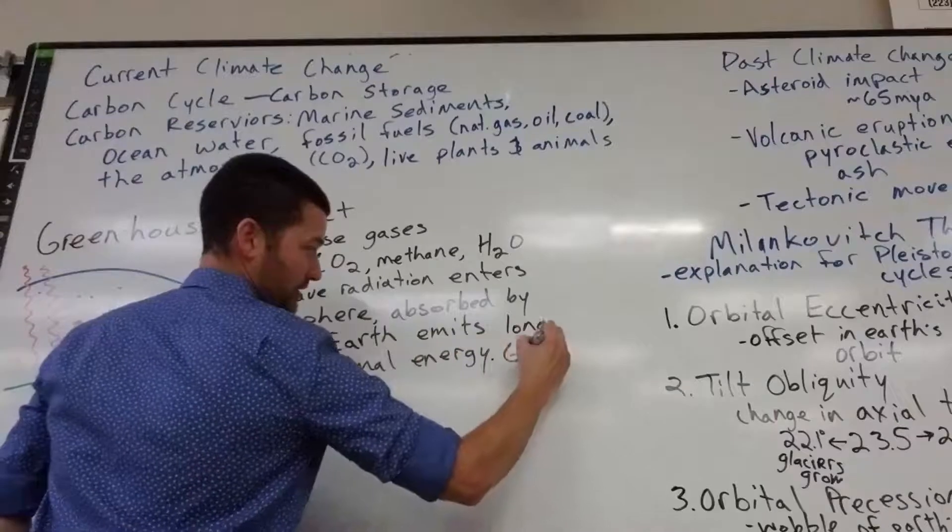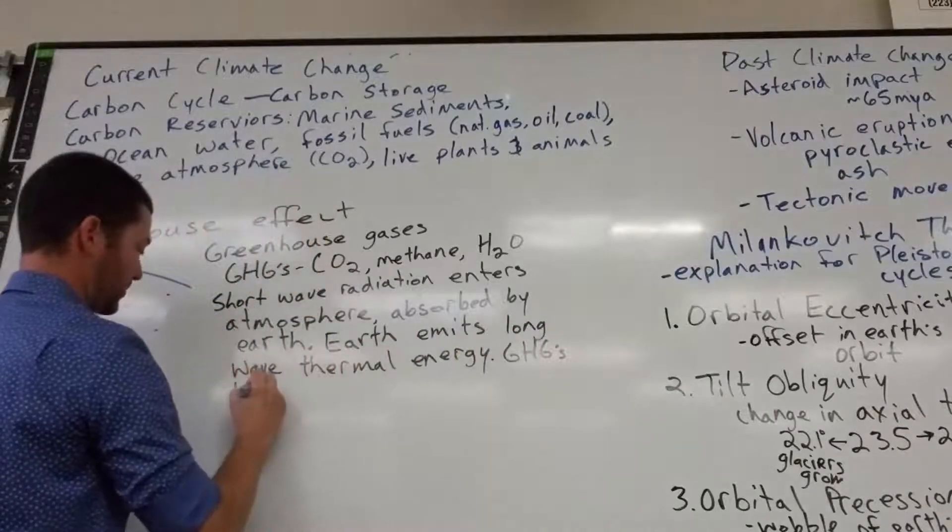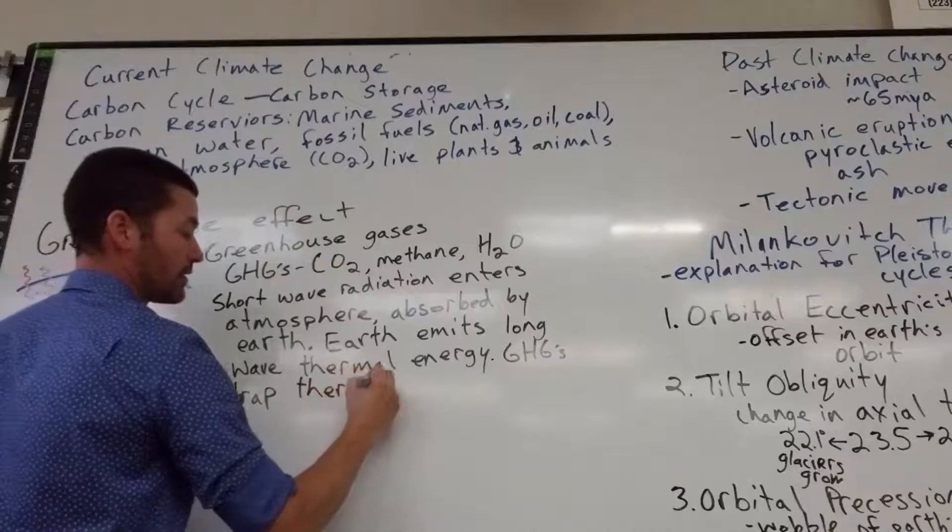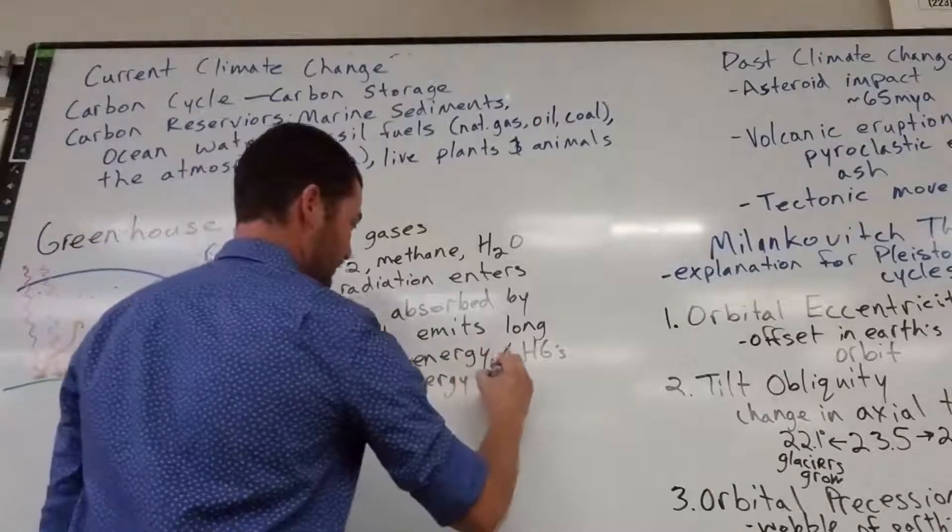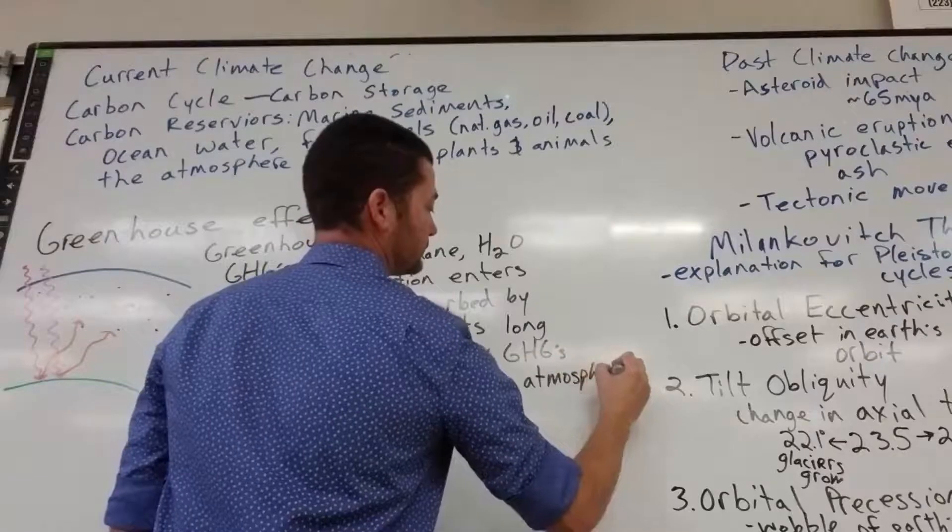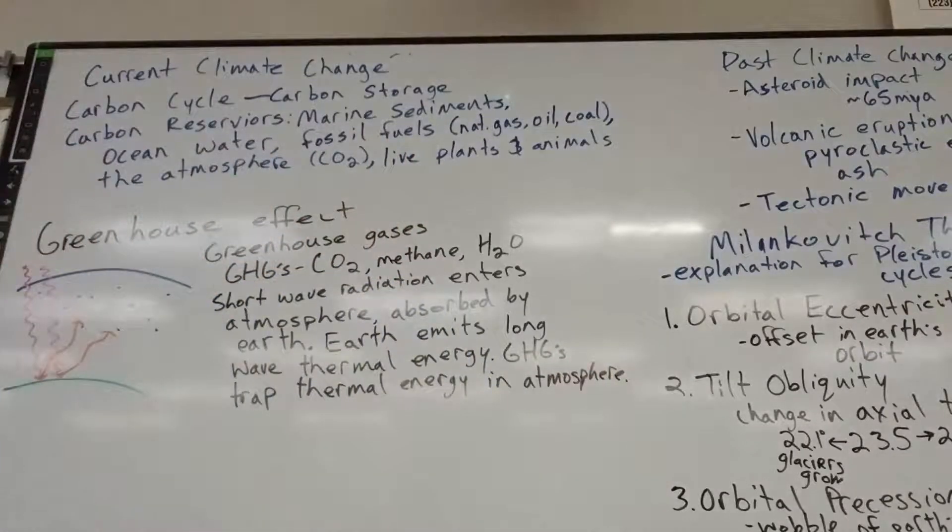Earth emits longwave thermal energy. We got that energy from the sun, changed it to heat, and then we just let it off. And then that thermal energy is trapped in the atmosphere by greenhouse gases. So GHGs, greenhouse gases, trap thermal energy, or heat, in the atmosphere. That's the greenhouse effect. Carbon dioxide, methane, and water vapor trap heat in the atmosphere. That's the greenhouse effect.